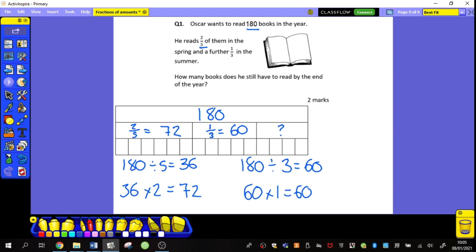Now I want to find out how many he's still got to read. So if I add those two together, 60 plus 72, which gives me 132. And then I take that away from my whole, that's going to give me how many books he has yet to read. So that would be the answer to that problem, 48 books left to read.